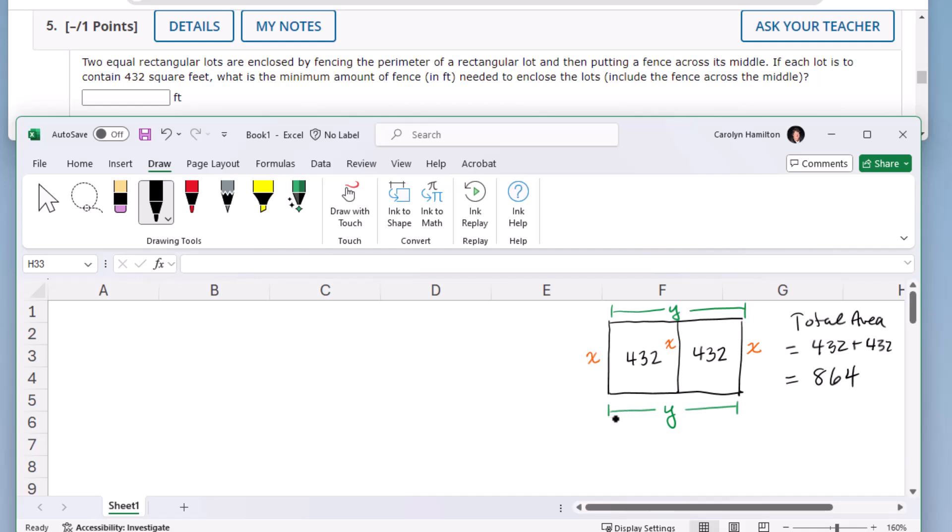So I made a decision to have my y be the total width across both lots combined, and having made that decision, then my fencing, I have three x's and I have only two y's.